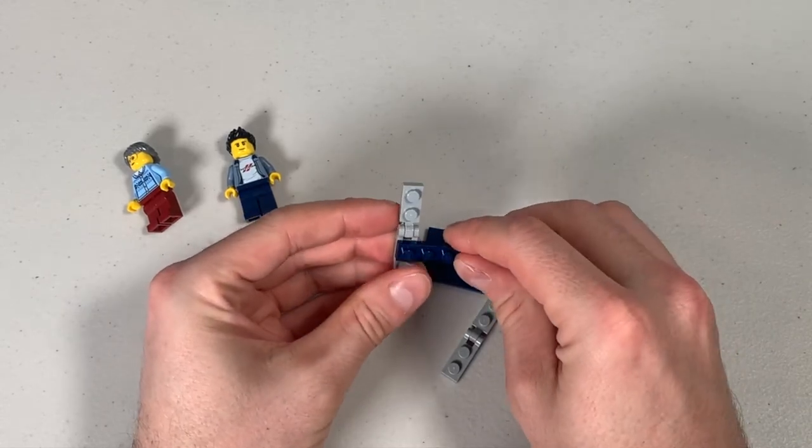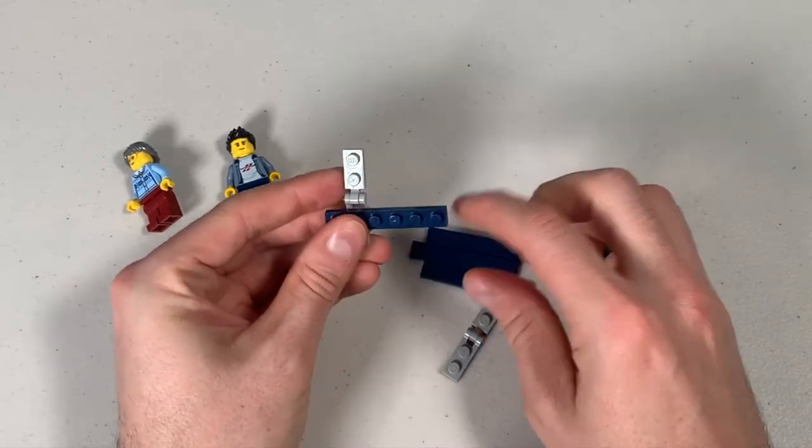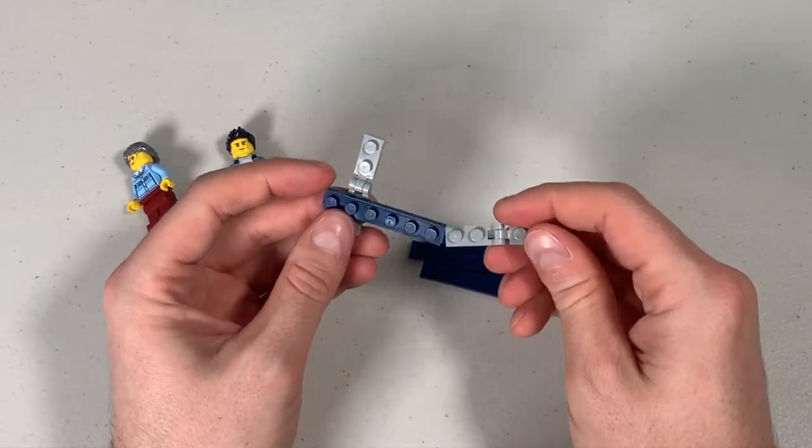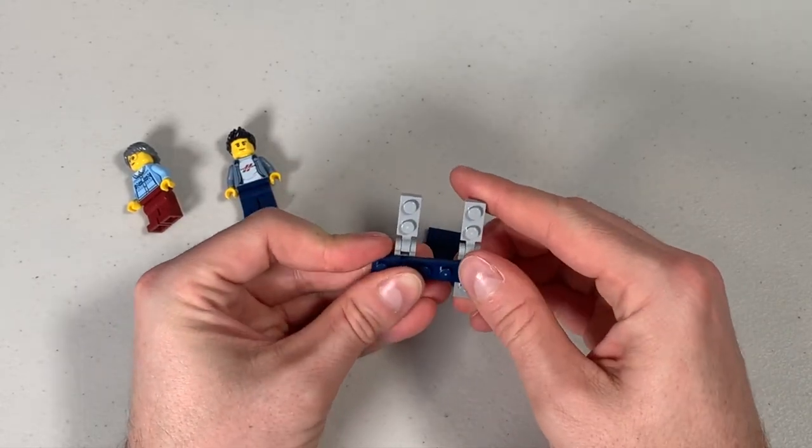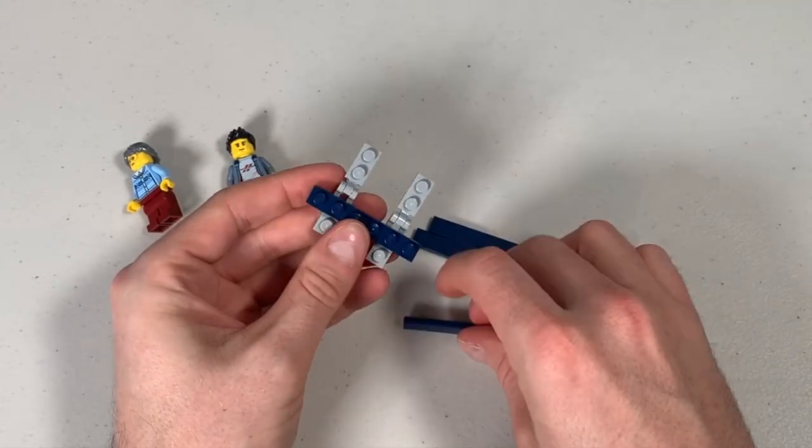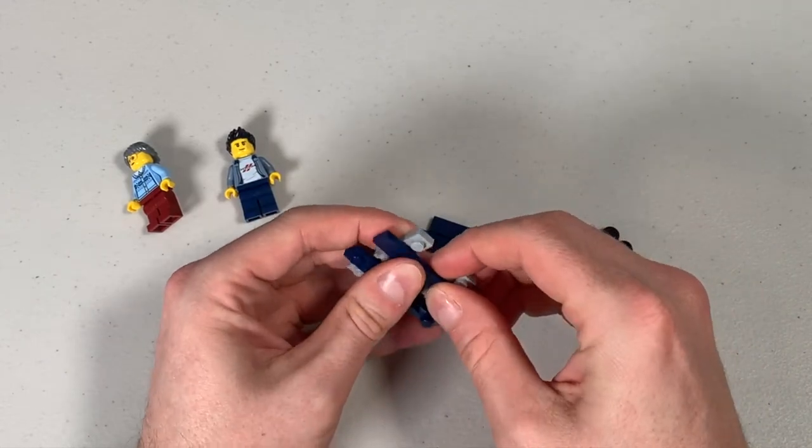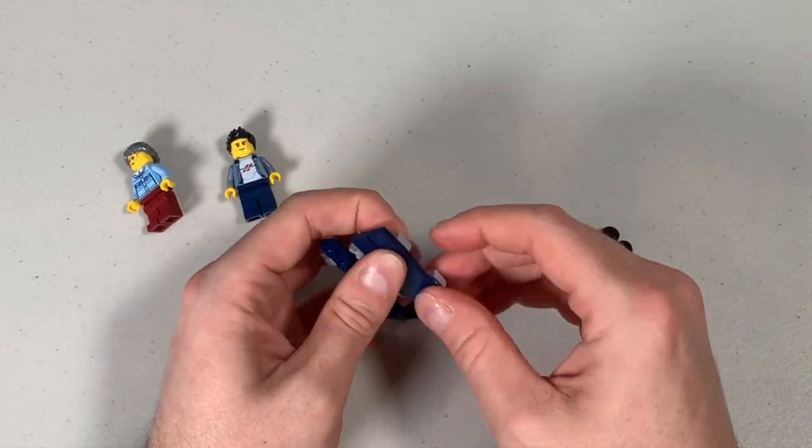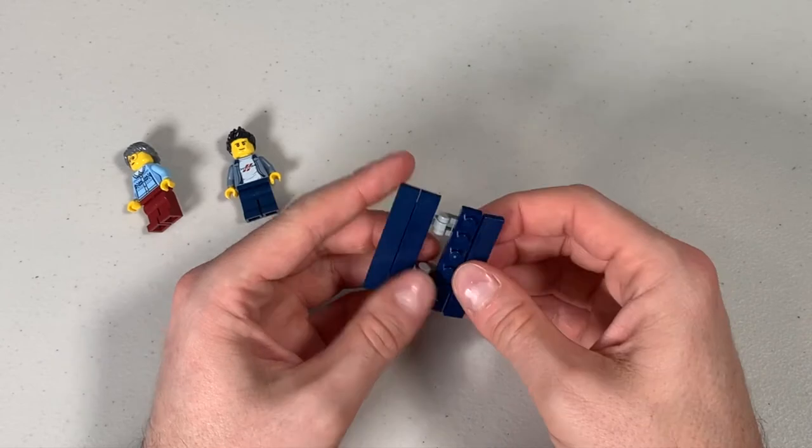Now I like to put a studded piece on my park benches to ensure that your minifig can sit on the park bench. A lot of people like to use just plain tiles, I apologize.